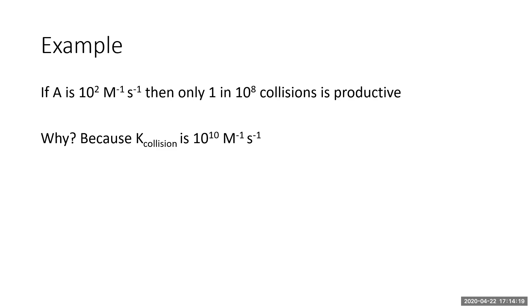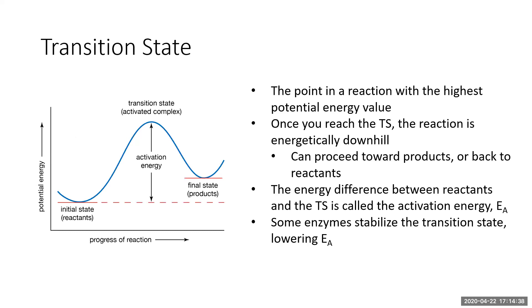The other thing that limits the rate of reactions is whether the collision gives enough energy for the reaction to occur. This is represented by the transition state — the point in the reaction with the highest potential energy. It's always going to be between reactants and products.